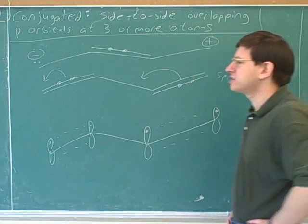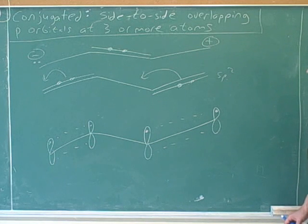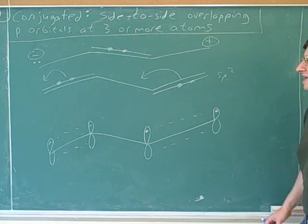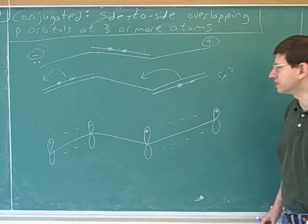In fact, even though we haven't said this before, resonance is always based on this idea of electrons being spread out between side-to-side overlapping p orbitals. Resonance is always based on this idea of electrons being spread out between side-to-side overlapping p orbitals.